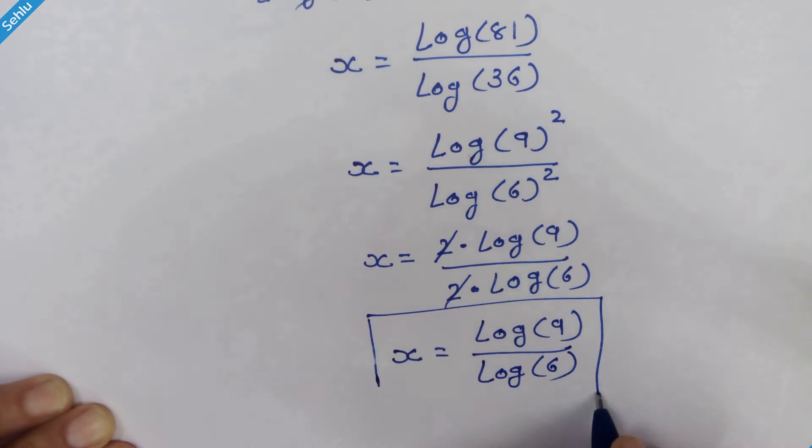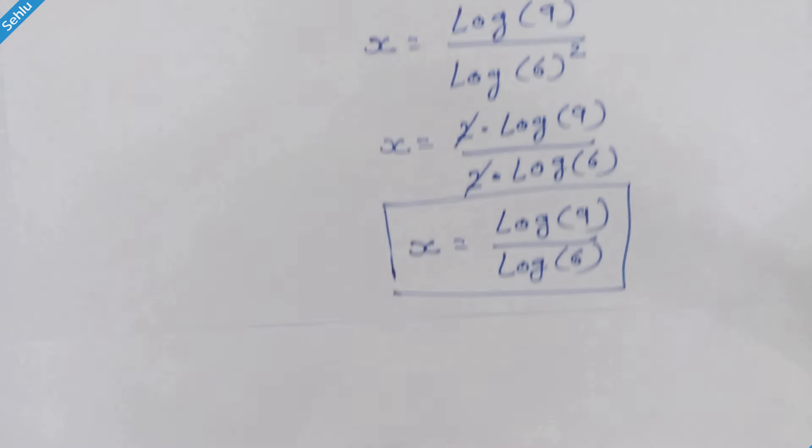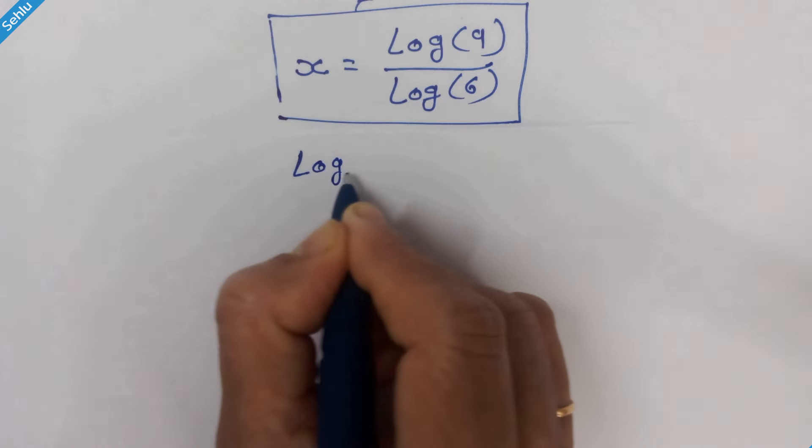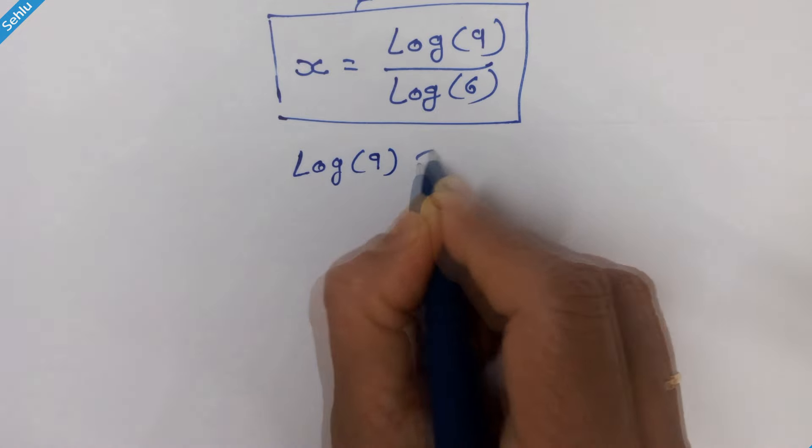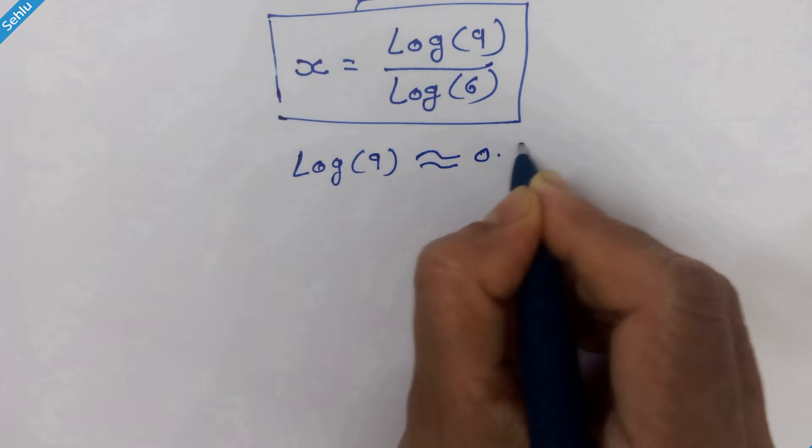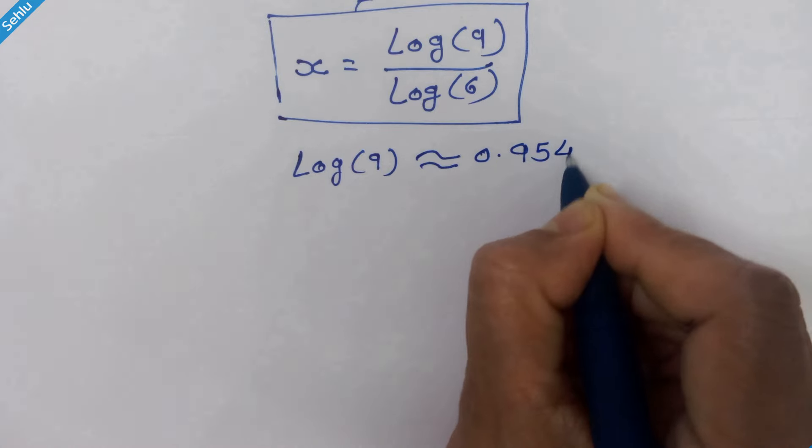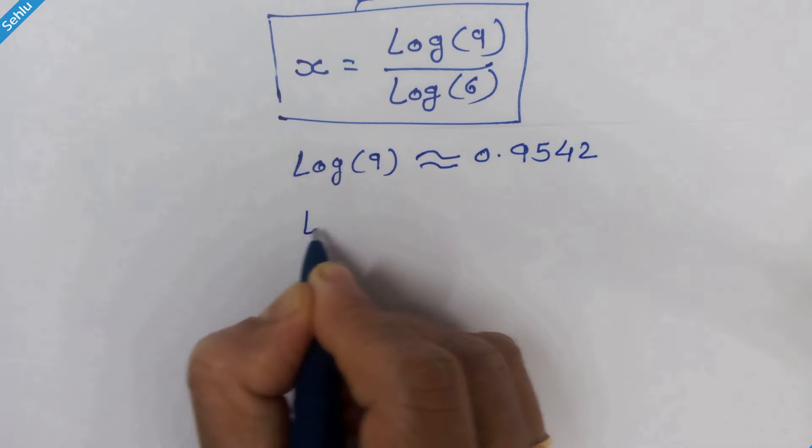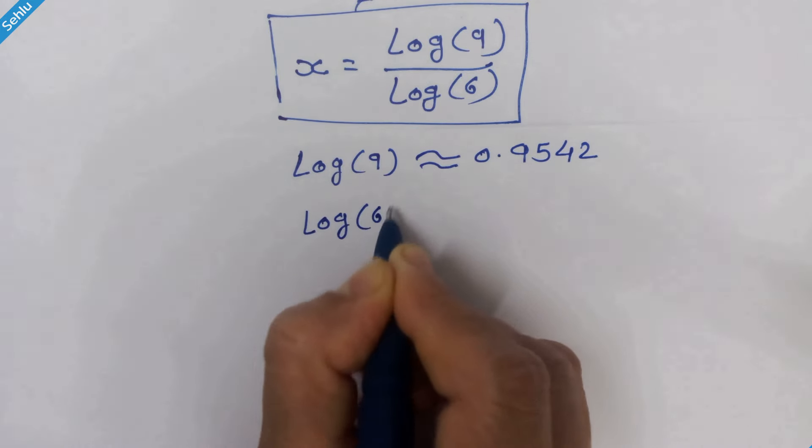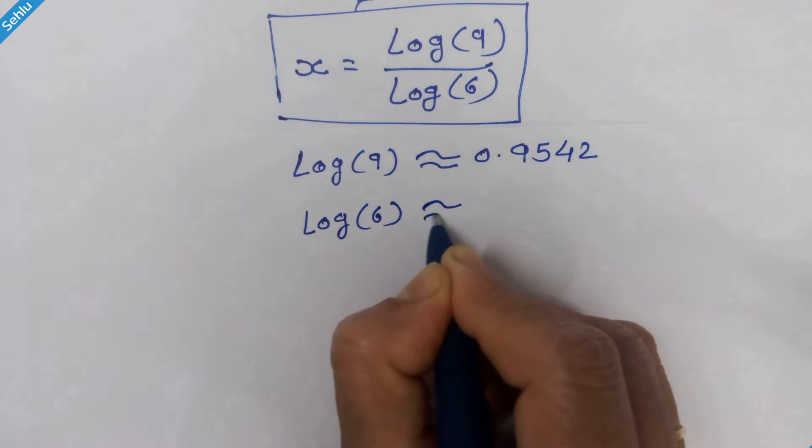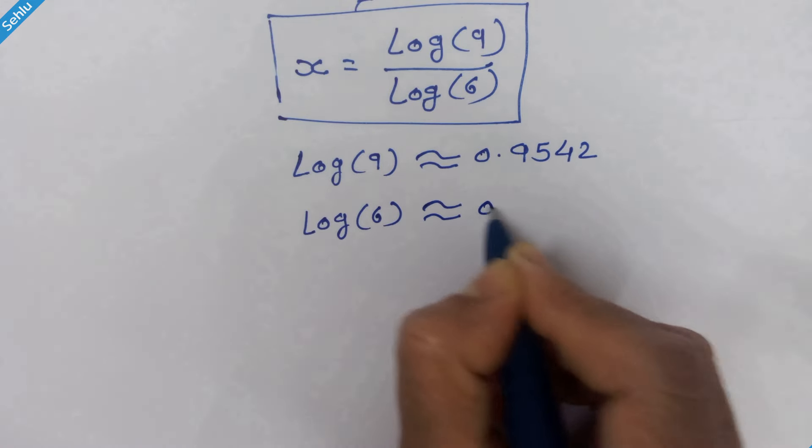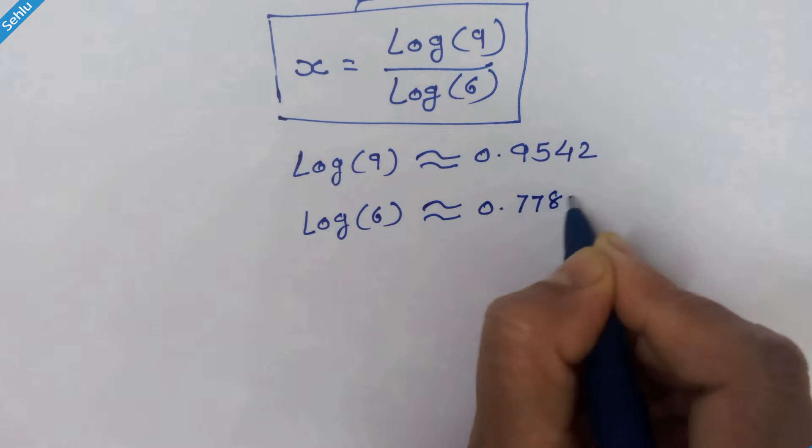Log of 9 is approximately 0.9542, and log of 6 is approximately 0.7781.